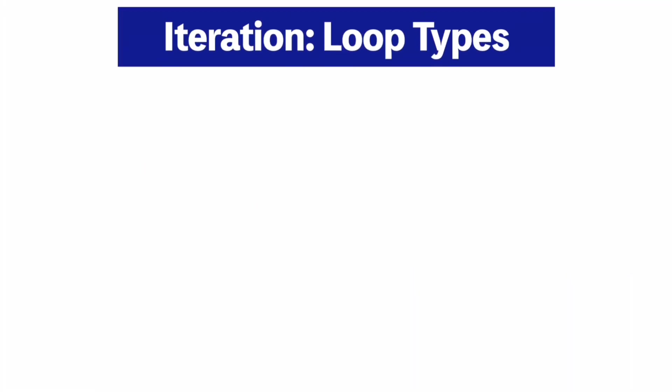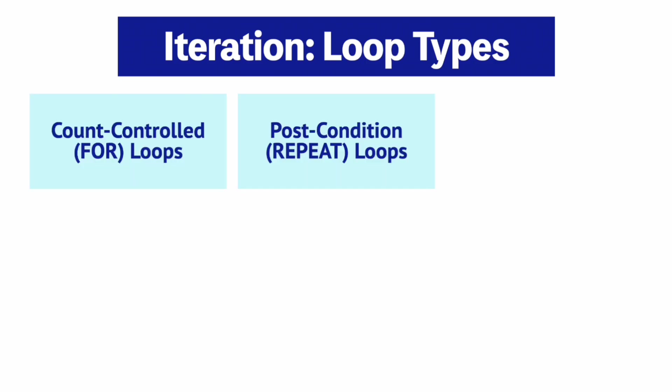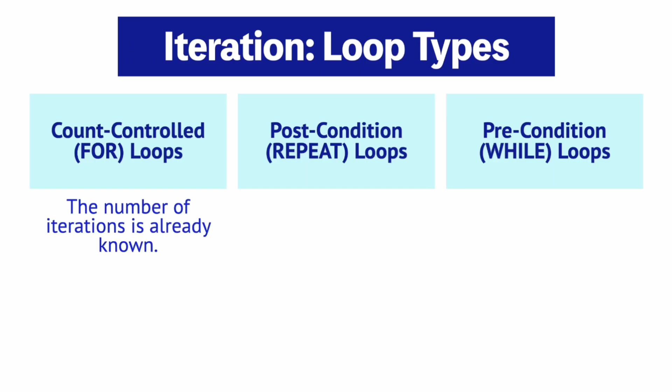Now onto iteration. There are three types of iteration statements or loops. There's the count control loop, post condition loop, and precondition loop. A count control loop is used if the number of iterations is already known in advance. An example in real life is if you go to the store for three days consecutively to get three random presents for three friends.